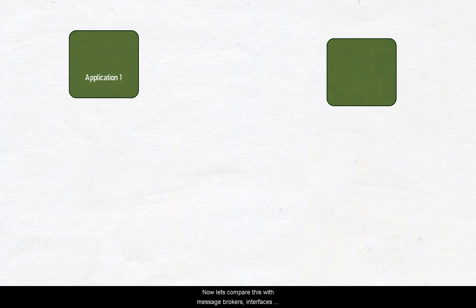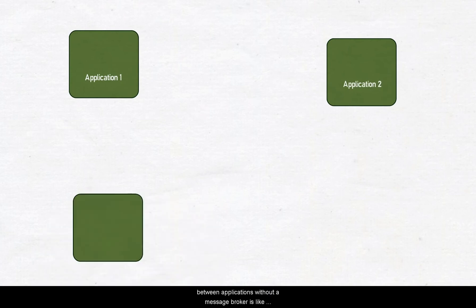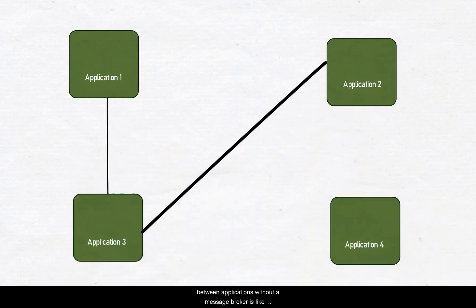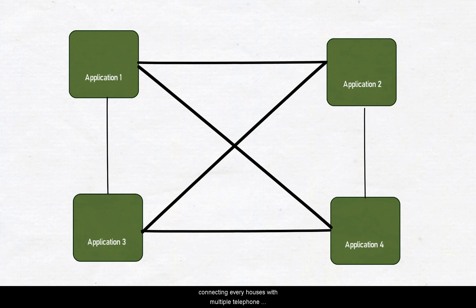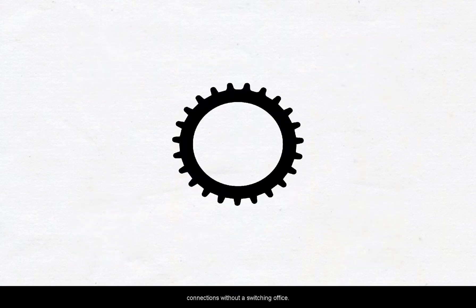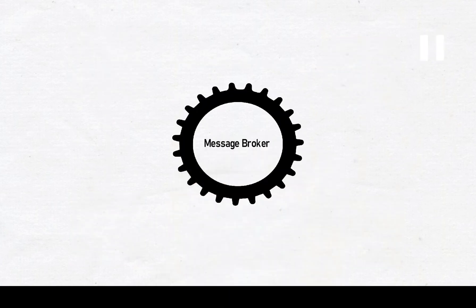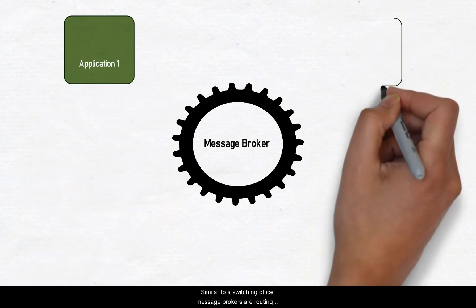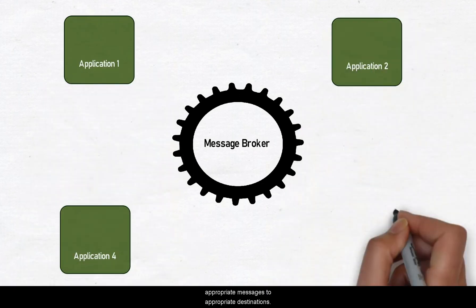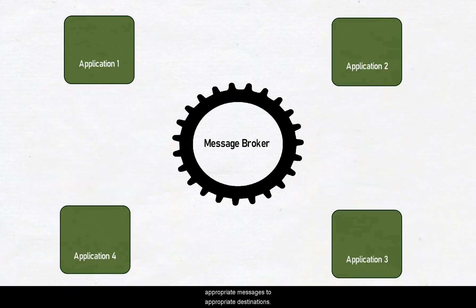Now let's compare this with message brokers. Interfacing between applications without a message broker is like connecting every house with multiple telephone connections without a switching office. Similar to the switching office, message brokers route appropriate messages to appropriate destinations.